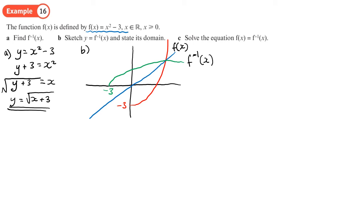From the sketch, we can identify the domain and range of the inverse. The domain of f⁻¹ is x ≥ -3, which matches the range of the original function (also ≥ -3). Looking along the x-axis gives the domain; along the y-axis gives the range. So the domain of f⁻¹(x) is x ≥ -3.